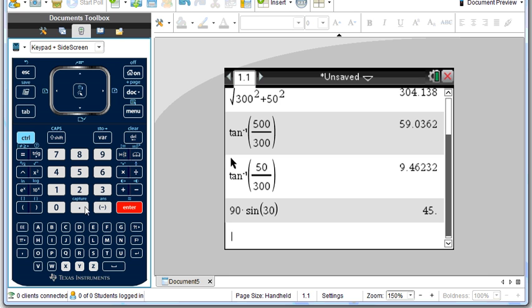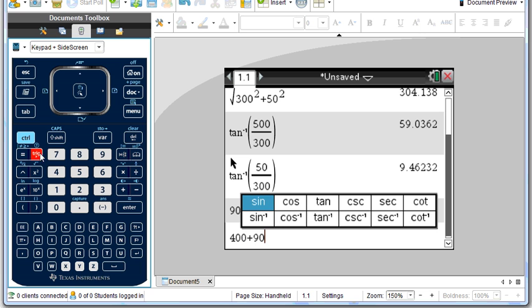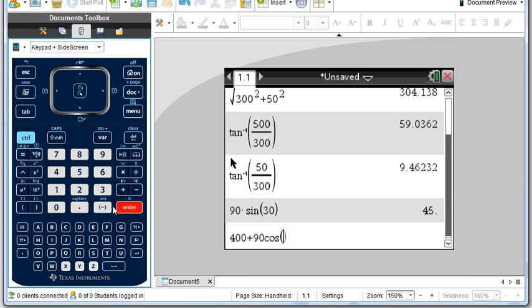And then we have, for the other part, 400 plus 90 cosine of 30 degrees, and we get that amount.